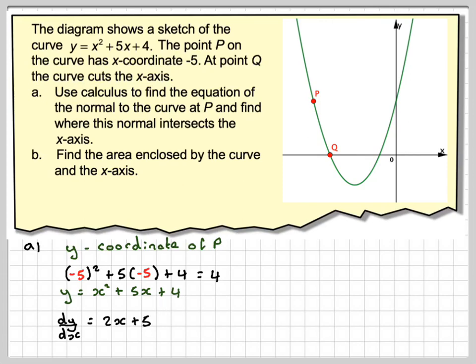We need to substitute x equals minus 5 into that. At x equals minus 5, because this is the coordinate here, we get dy/dx is 2 times minus 5 plus 5, which is minus 5.